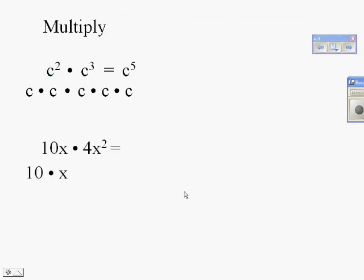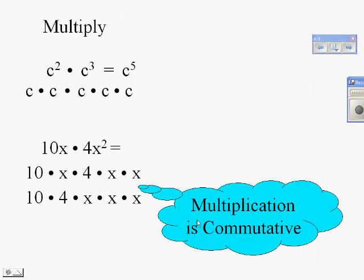When we do this problem, we could go the long way and write the whole thing out, use our commutative property, and then answer individual parts. 10 times 4 is 40, and then x times x times x is x cubed. We can really do this in our head now: 10 times 4 is 40, multiplying your coefficients. Then if you have 1 factor of x and 2 factors of x, that's 3 factors of x altogether when you move them together using the commutative property.